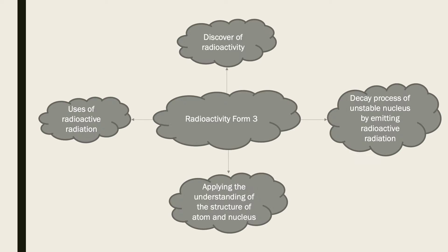We have actually learned radioactivity before when we were in Form 3. We learned the history of radioactivity, the decay process of an unstable nucleus by emitting radioactive radiation, and also how to apply the understanding of the structure of the atom and nucleus. Lastly, we learned the uses of radioactive radiation.